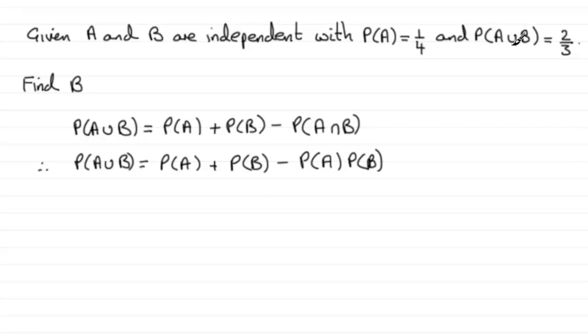Now we've got the values then for probability of A union B. It is two thirds and that's going to equal the probability of A which we have here is a quarter and then plus the probability of B minus a quarter again times the probability of B.